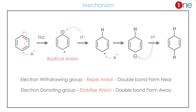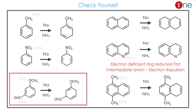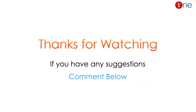Here are some examples to practice. If there is an electron-donating group, the double bond forms near it. If there is an electron-withdrawing group, the double bond forms away from it. In a bicyclic system, you have to choose the ring which is electron-deficient, since the attack is from the electron from sodium. If you have both an electron-donating group and an electron-withdrawing group, there is no competition — draw the double bond near the electron-donating group and away from the electron-withdrawing group. That's all from this video, thanks for watching.